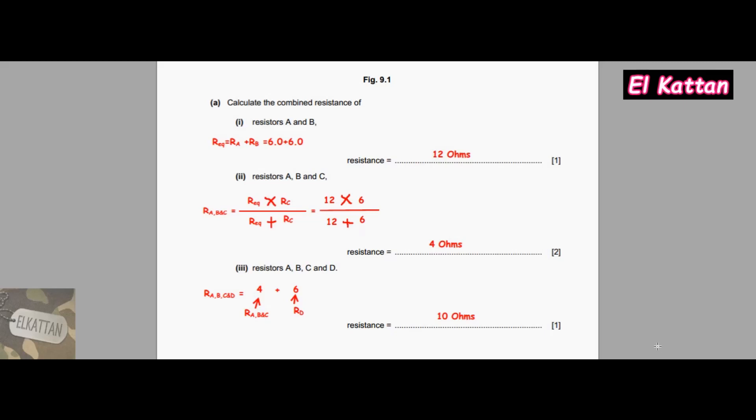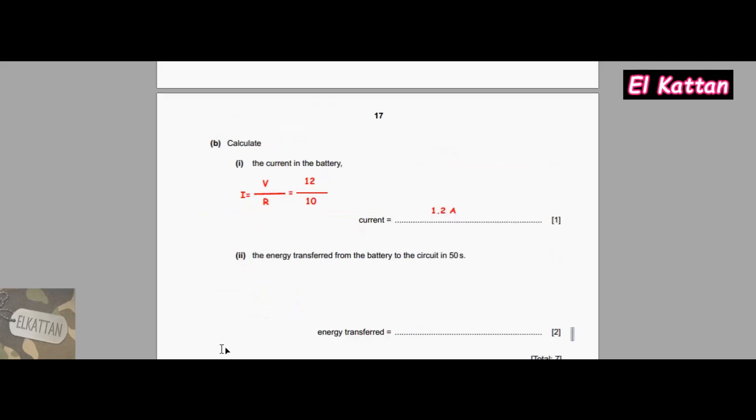For part (b)(i), calculate the current in the battery. Using Ohm's law, I = V / R. V is 12 volts from the battery divided by the total resistance, which is 10 ohms, equals 1.2 amperes.